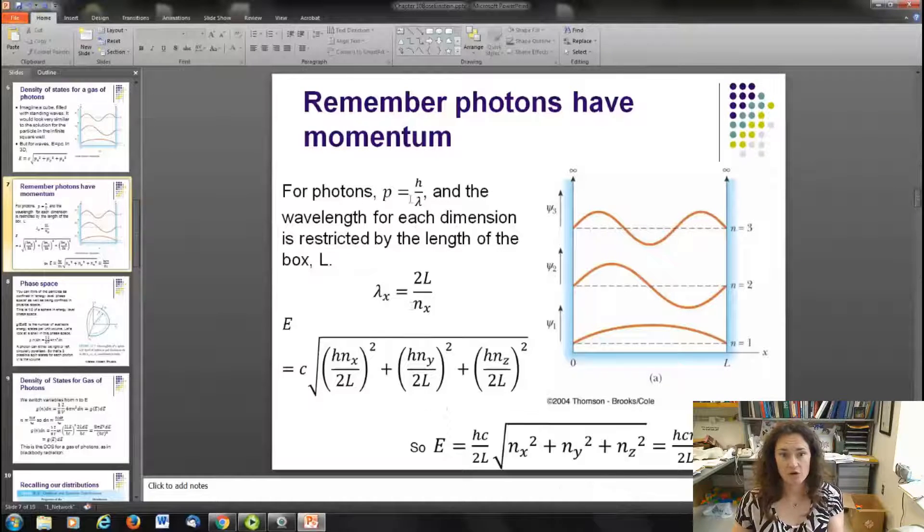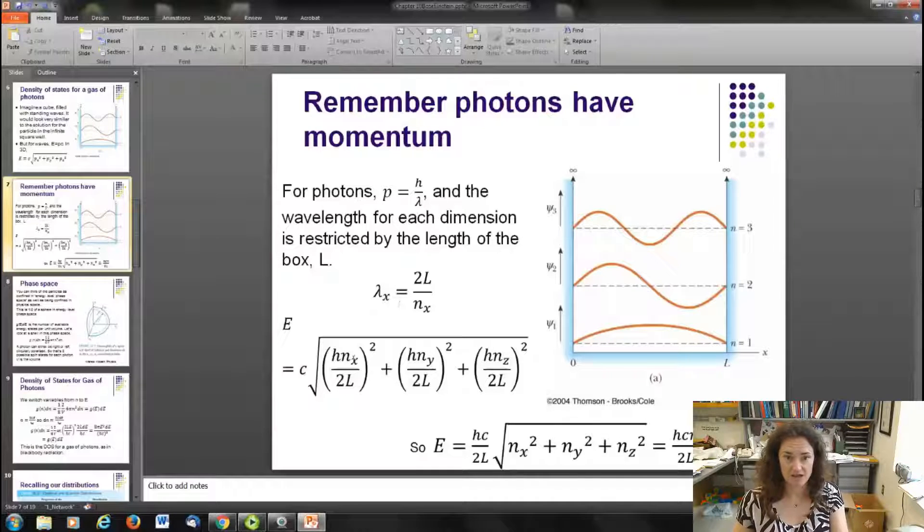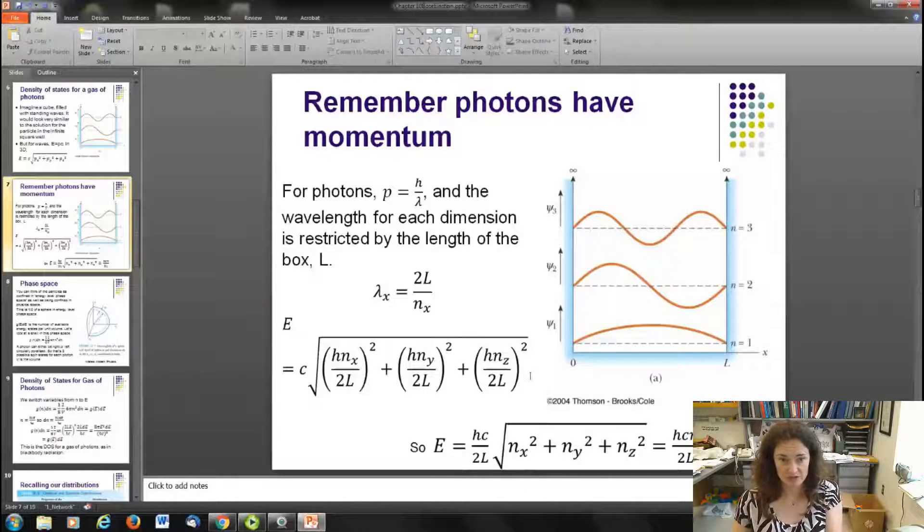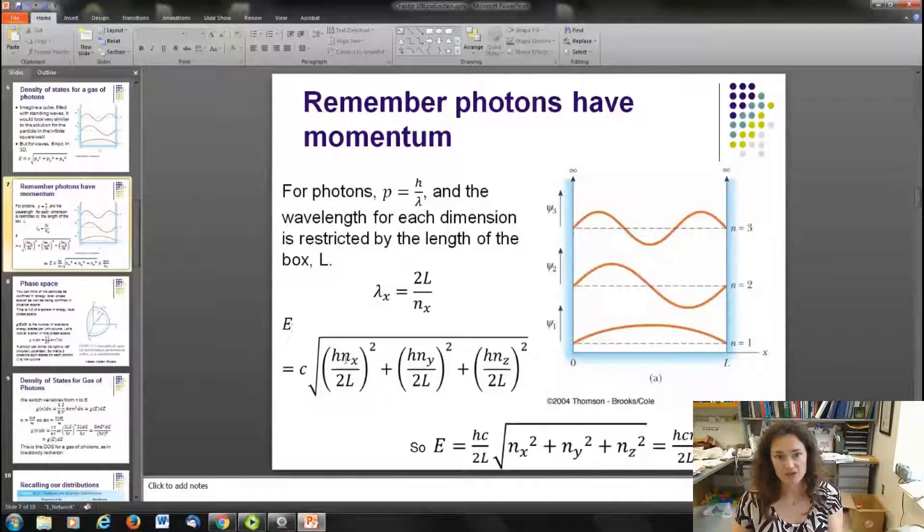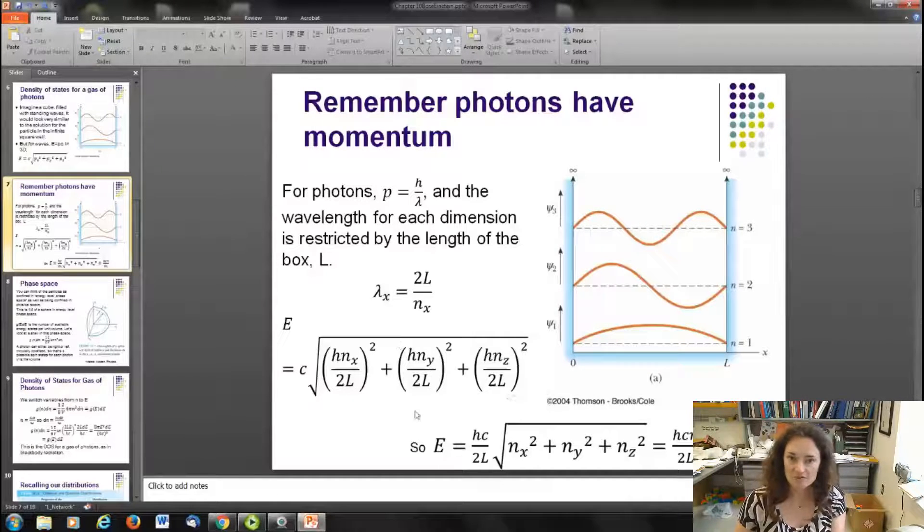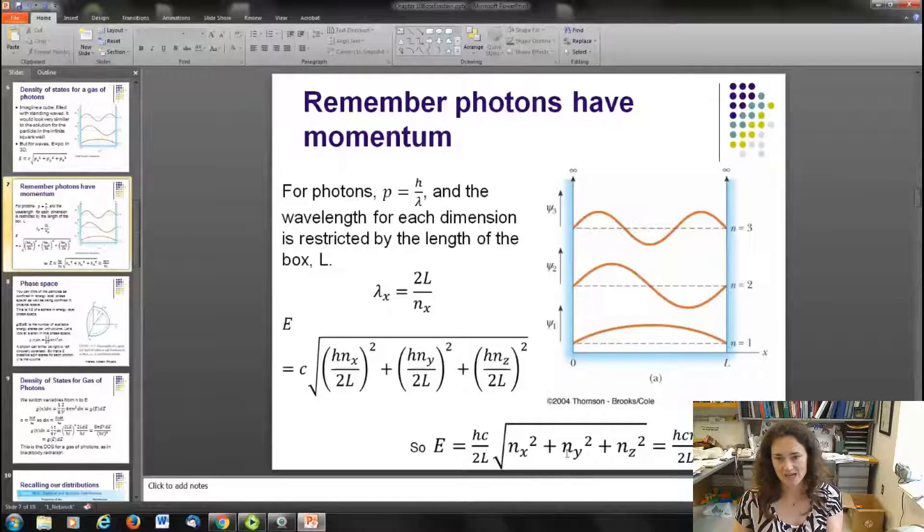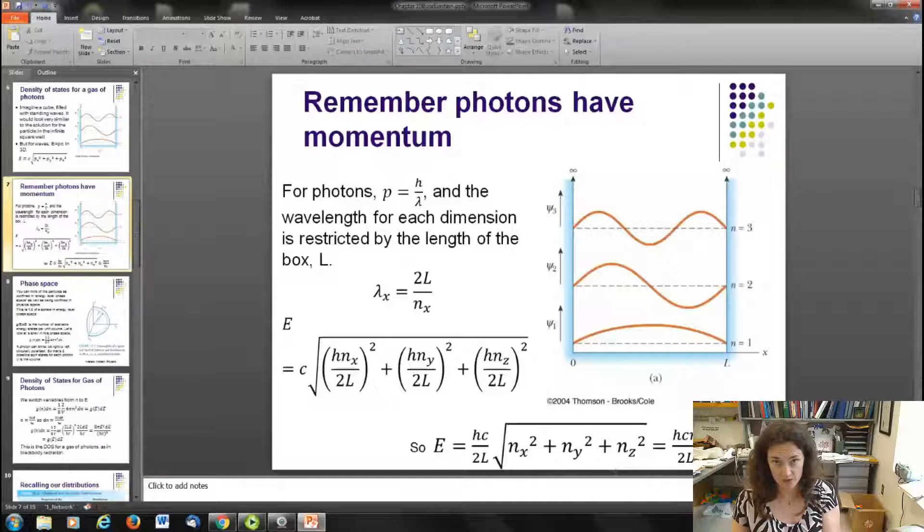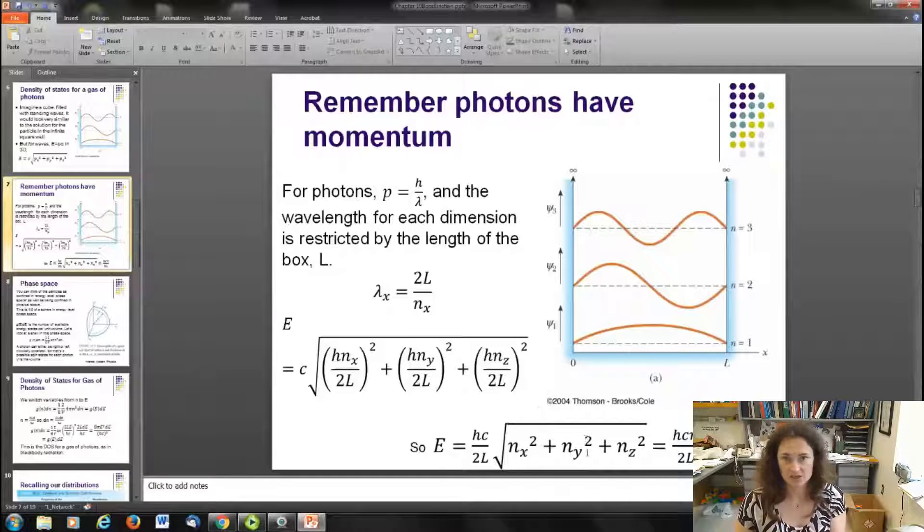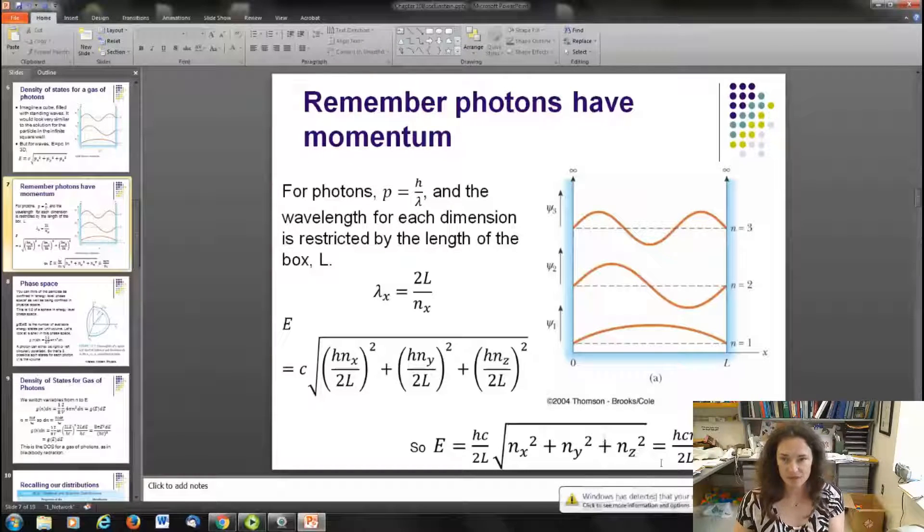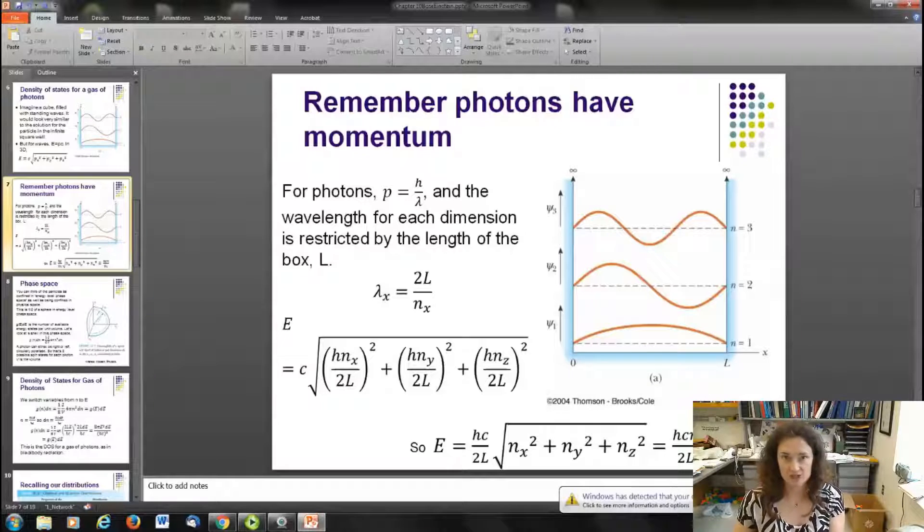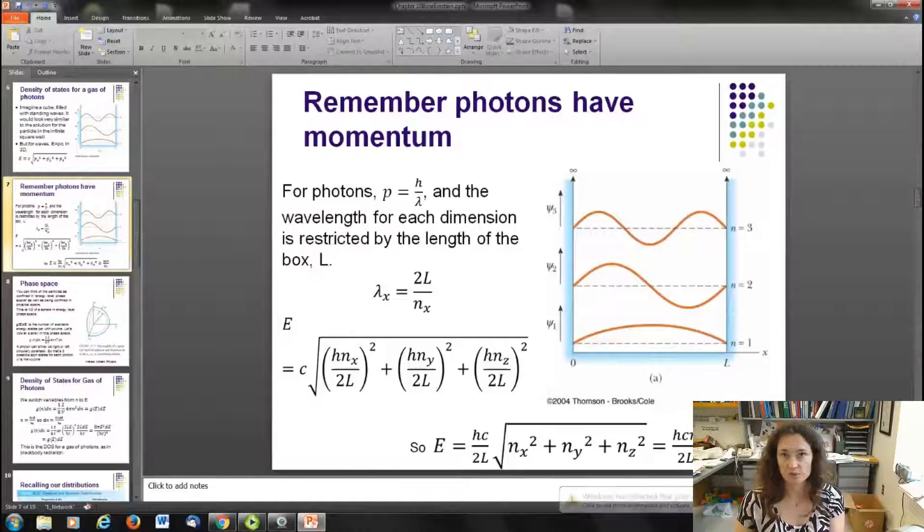Now plugging in for λ = h/p, and solving for p in each dimension, you get E = c√[h(n/2L)²] and summing that up for the x, y, and z directions. If I pull common factors out, then I have E = (hc/2L)√(nx² + ny² + nz²). If we use the idea that our quantum number n = √(nx² + ny² + nz²), then we can solve and find that E = hcn/2L. So that's our energy expression. And it's different from the energy expression that we derived for the gas particles.